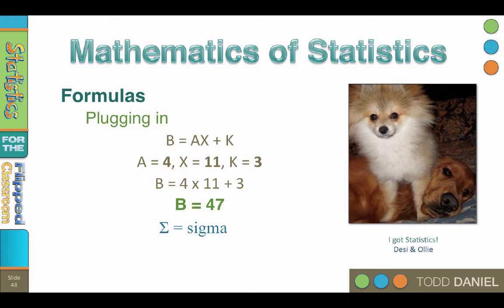Sometimes the formula will have this symbol that looks like a crooked capital E. That is the Greek letter sigma, and it means add up these numbers. It is read as the sum of sigma x, and it means add up all of the x values to get a total.